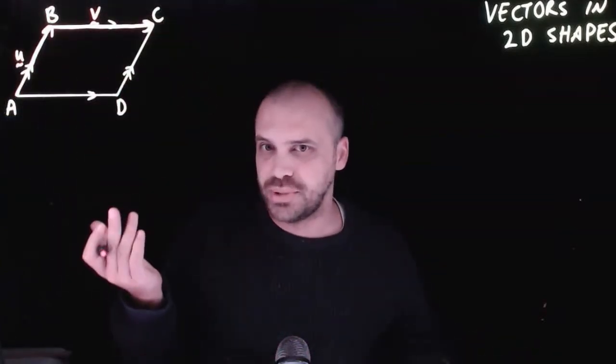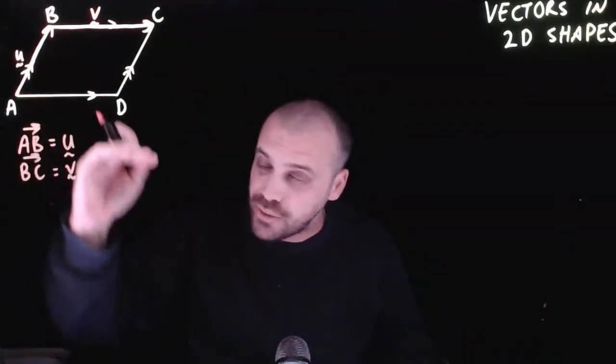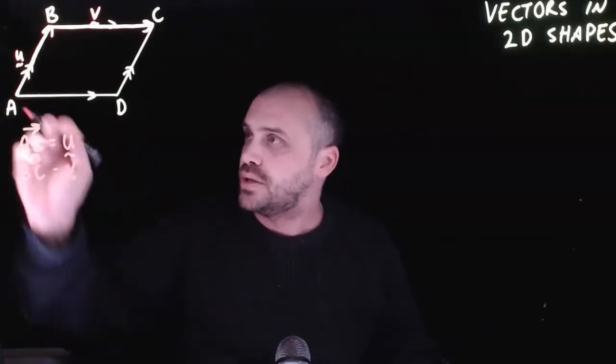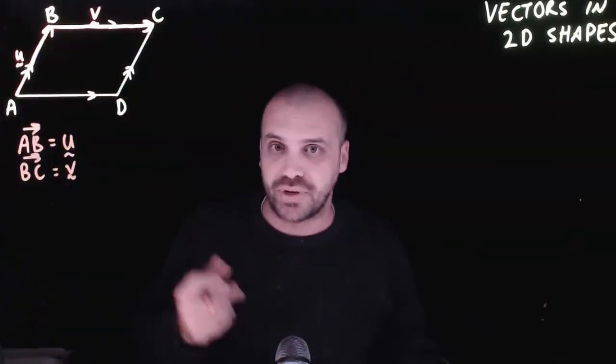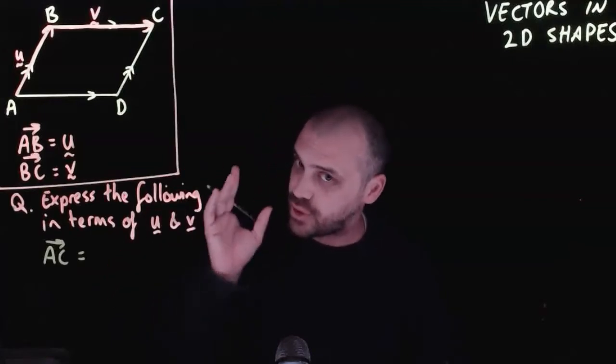We can formalize that a little bit. The vector AB, AB with an arrow above it, equals vector U. And from B to C, vector V. And so the sorts of questions we're going to be able to answer are, express the following in terms of U and V.